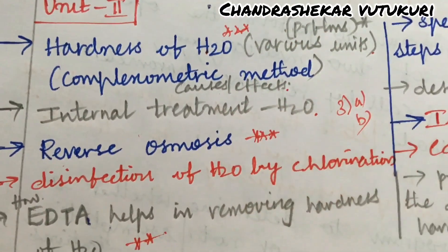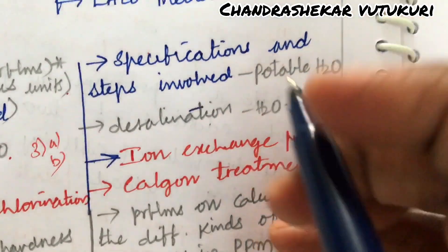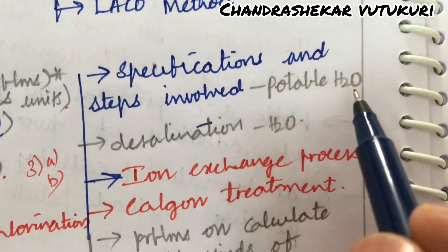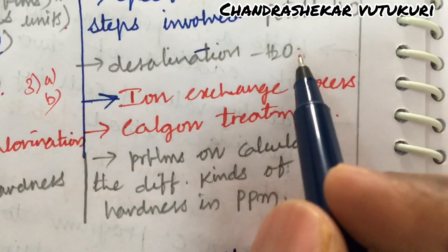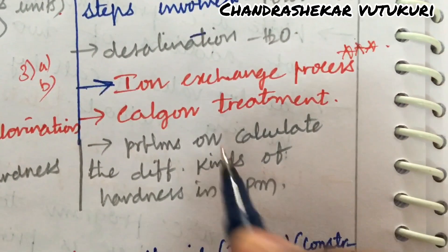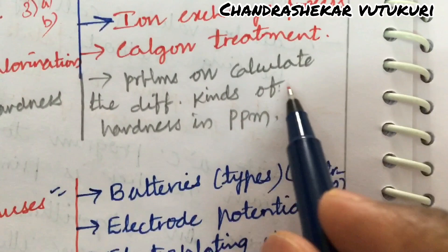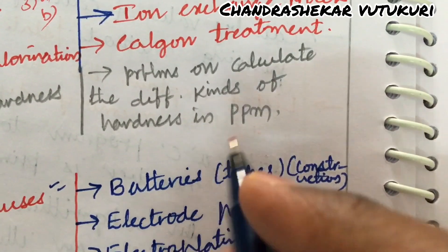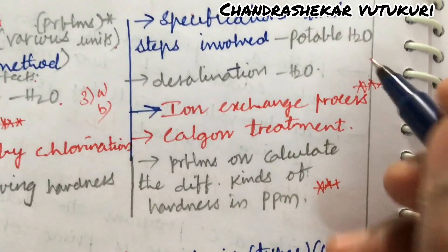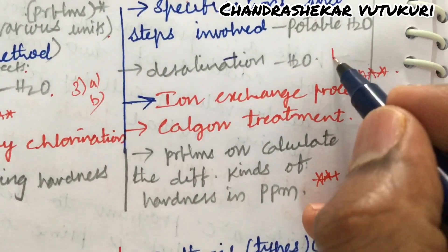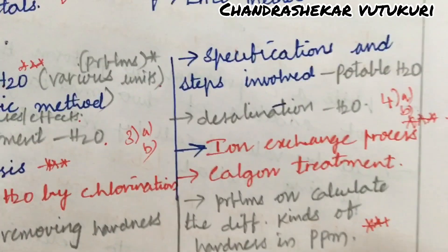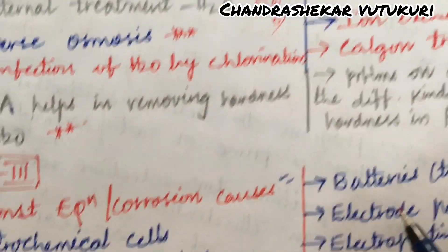This is for 3-A as well as 3-B. The fourth question is about the specifications and steps involved in potable water, desalination of water, and the ion exchange process — said to be topmost gunshot questions — and Calgon treatment. Problems on calculating the different kinds of hardness in PPM are also said to be asked several times; you can expect a problem this time for sure in your question paper. From this part we can expect 4-A as well as 4-B. I hope you are going to work out very neatly along with the diagrams.